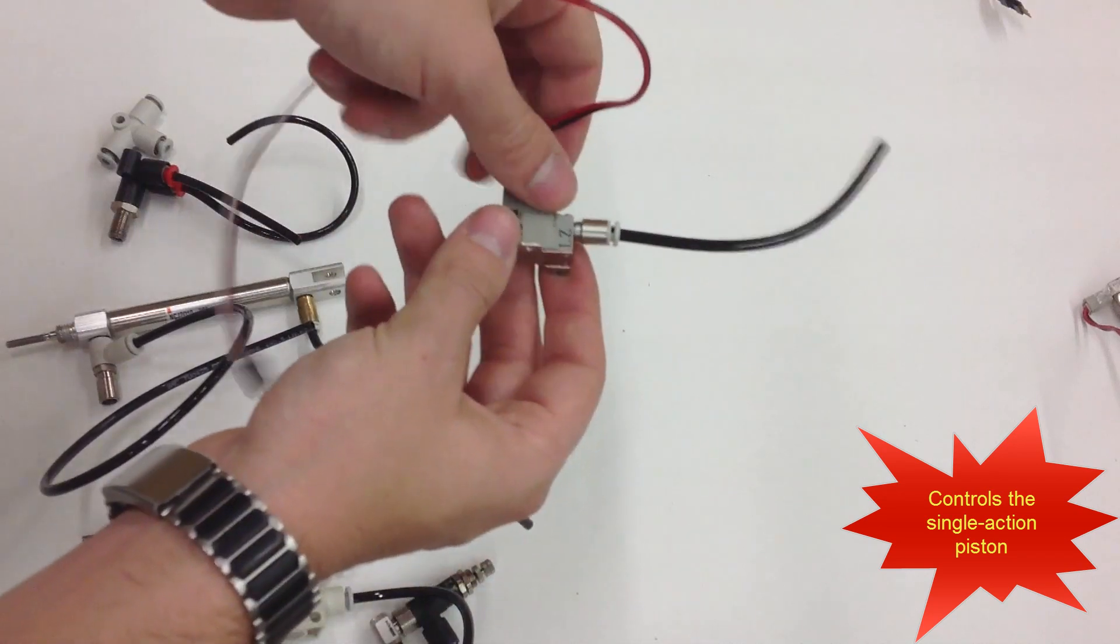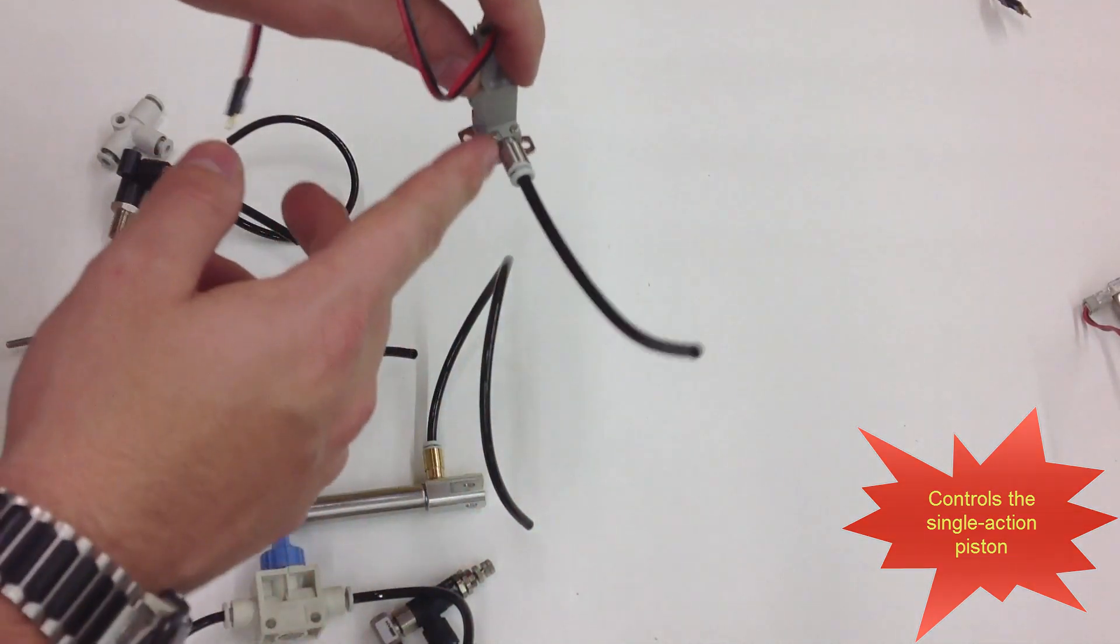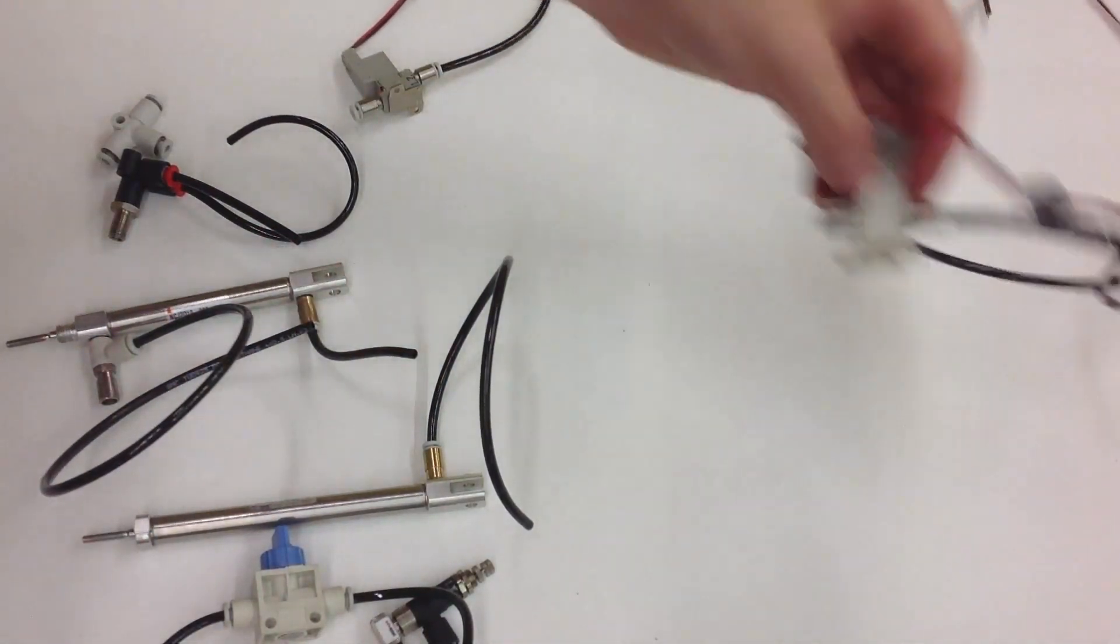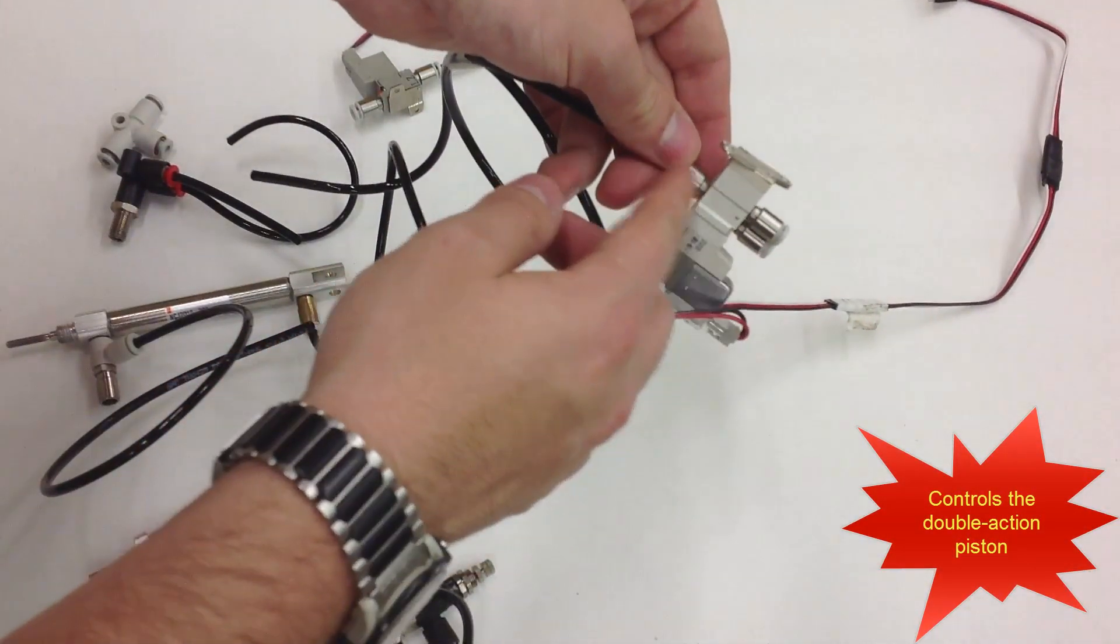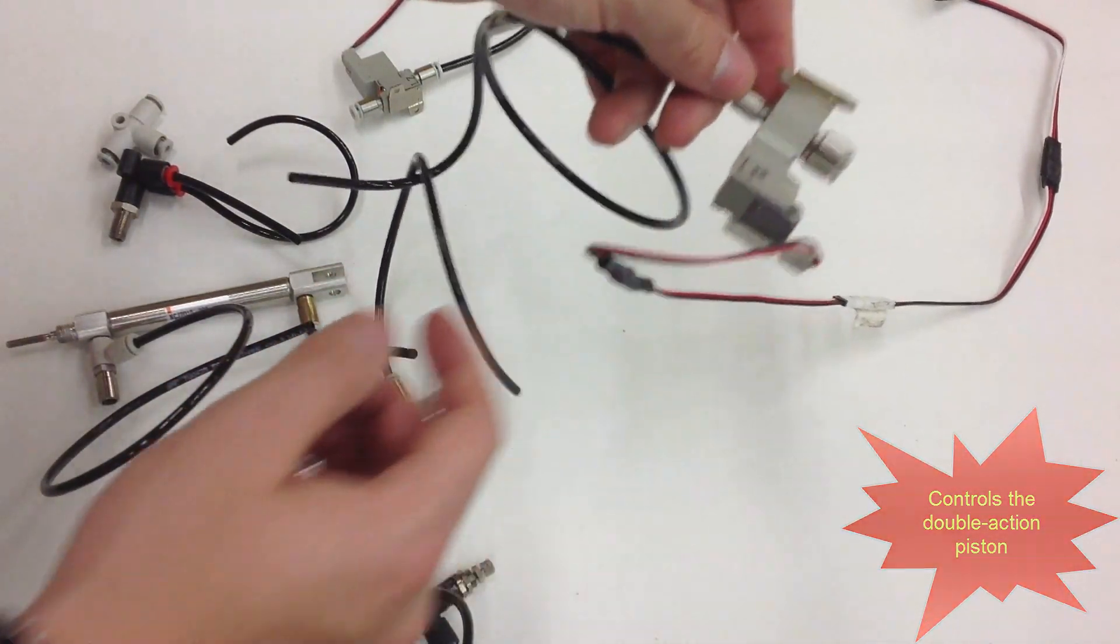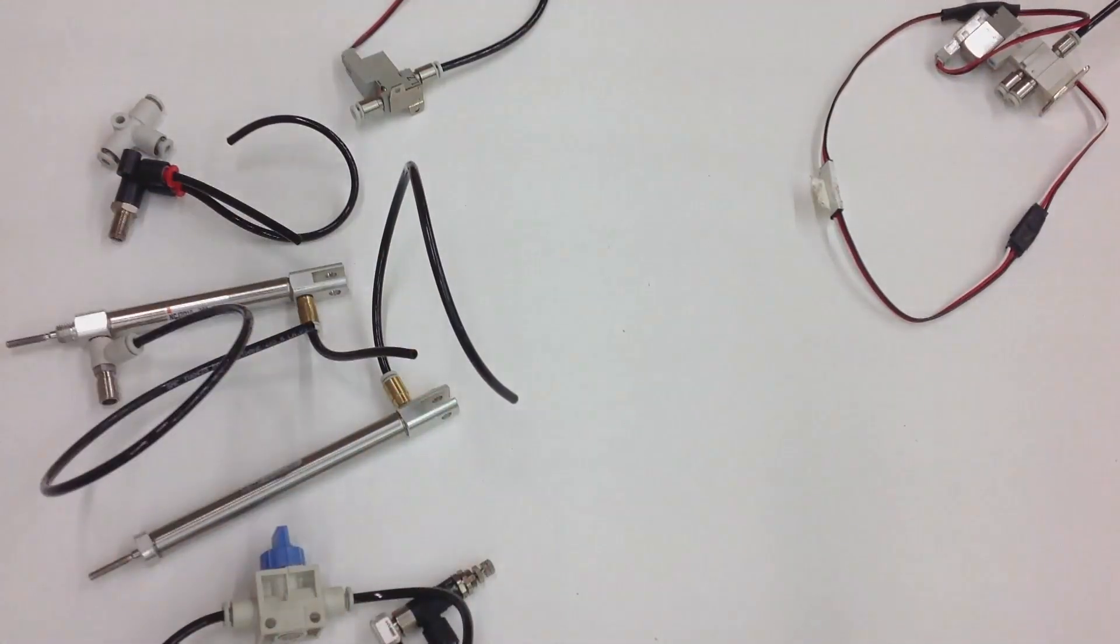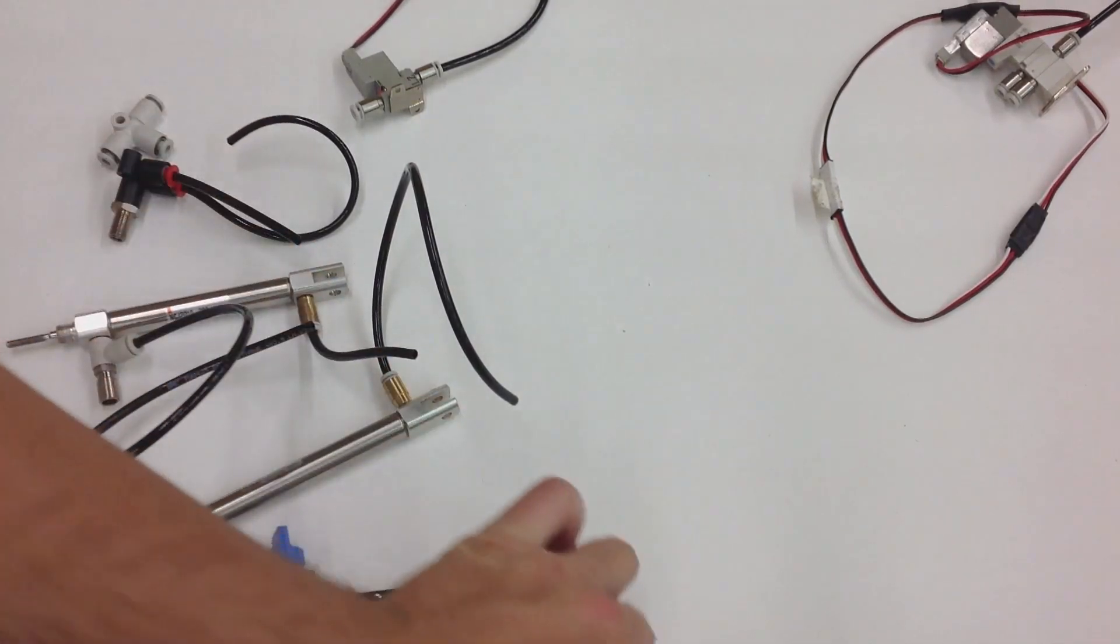The simple relay, a single action relay, works with the single action piston because it has only one air input and one output. And the double action relay has one input and two outputs. That's for the double action piston. They both connect the same way to the VEX interface but they're simply programmed differently.